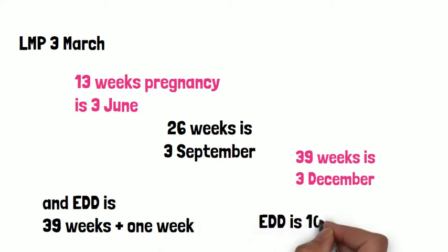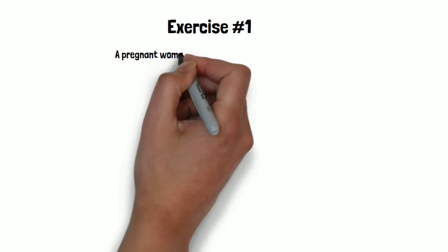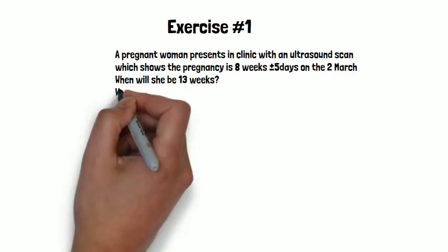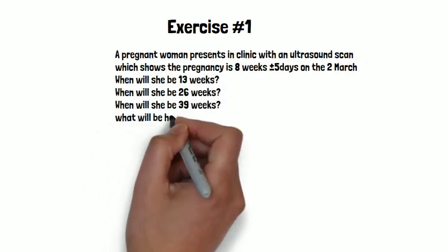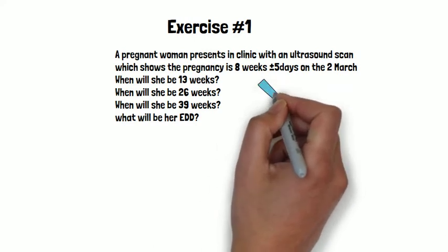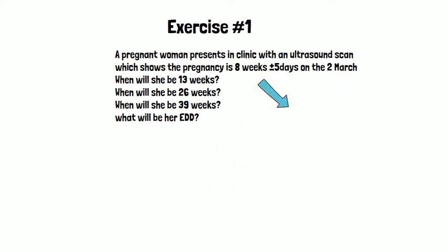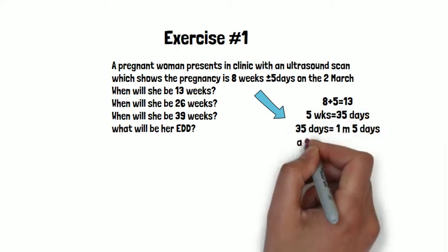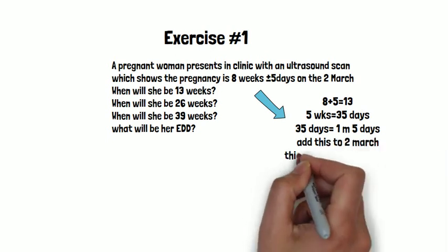Exercise one: a pregnant woman presents in clinic with an ultrasound scan which shows the pregnancy is 8 weeks plus or minus 5 days on the 2nd of March. When will she be 13, 26, and 39 weeks, and when will be her expected date of delivery? We have one ultrasound scan, and whenever we do a calculation with ultrasound dates there is always an error depending upon the time of pregnancy at which the ultrasound examination is done. This error has to be included in the dates.